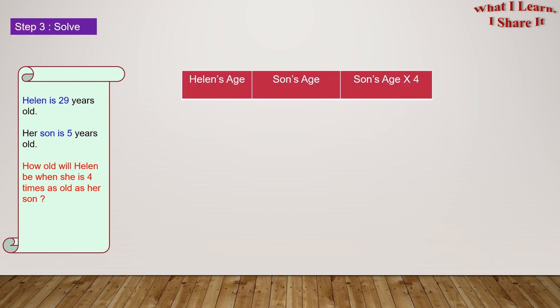Step three. Solve. So here are the headers for the table. Helen's age, son's age, and son's age times four. So presently, Helen is 29 years old, and her son is 5 years old. So son's age times four, which also equals 5 times 4, equals 20.